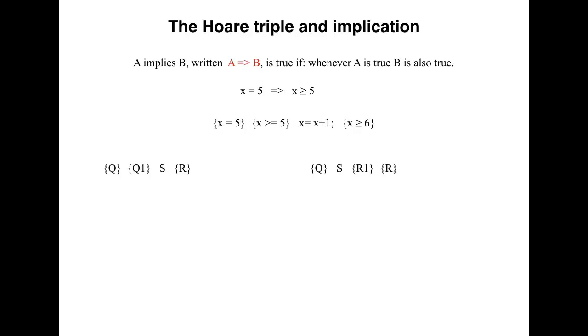There are two general forms for this situation. One where the two assertions appear before the statement, and one where they appear after the statement. And for each, here is how we write a definition of a Hoare triple including implication. In one case, and the other case.